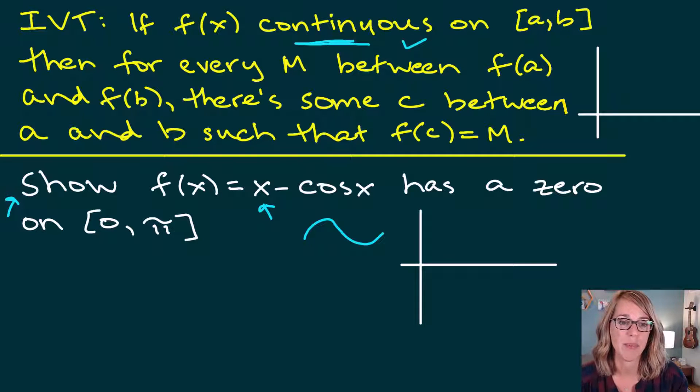On our interval a, b, our interval is 0 to pi. This is where we really need to figure out what they're talking about. Then for every m between f of a and f of b, there's some c between a and b such that f of c equals m. Here is exactly what that means.